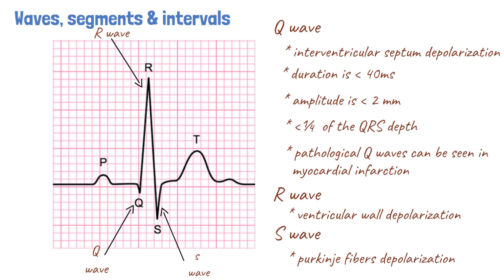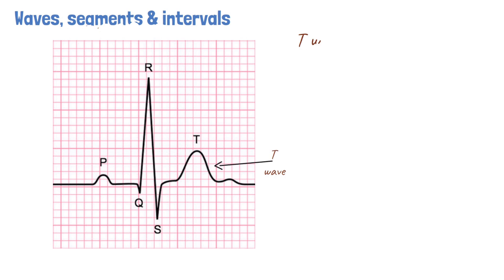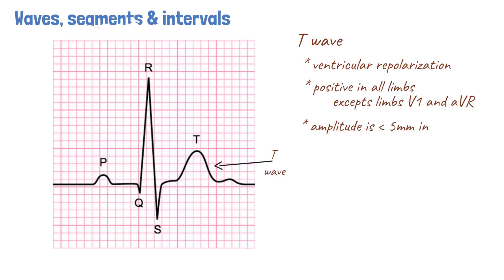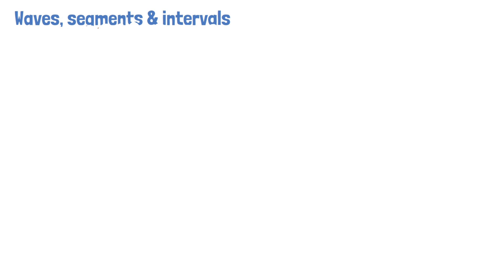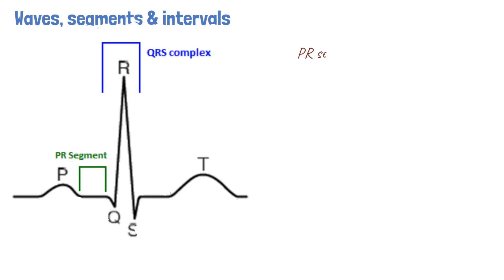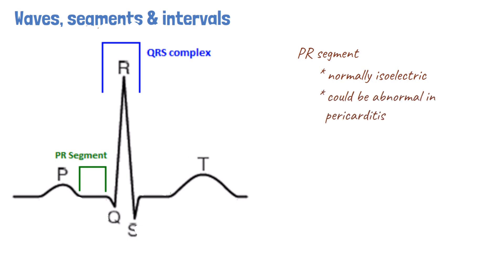The positive deflection seen on the ECG tracing following the QRS complex is called a T wave. T waves represent ventricular repolarization. A normal T wave is positive in all leads except lead 3, 1 and aVR. It is less than 5 mm in amplitude in the limb leads and less than 15 mm in amplitude in the chest leads. Segments are usually isoelectric lines present between two waves. The PR segment commences at the ending of the P wave and ends at the beginning of the QRS complex. It represents the duration of conduction of electrical impulses from the AV node to the bundle branches. The PR segment is isoelectric under normal circumstances, but deviation can occur in the presence of pericarditis and atrial ischemia.